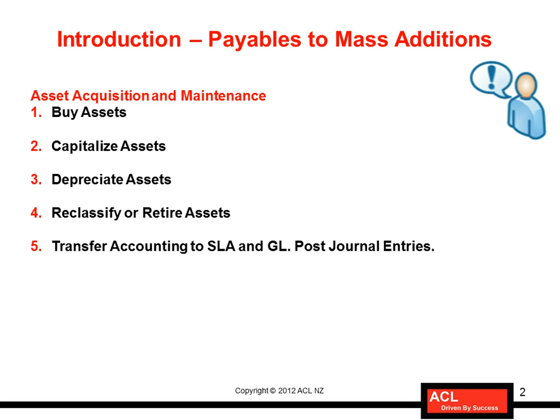Once the asset life cycle gets over, organizations simply retire those assets. While doing all these transactions, Fixed Assets generates accounting entries, and the Fixed Assets module integrates very seamlessly with Subledger Accounting and the General Ledger module. Oracle can simply transfer those accounting entries from Fixed Assets to these modules, where the accounting can be posted in GL.